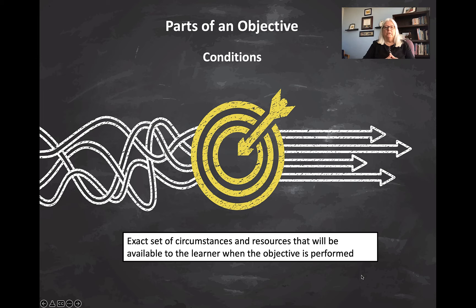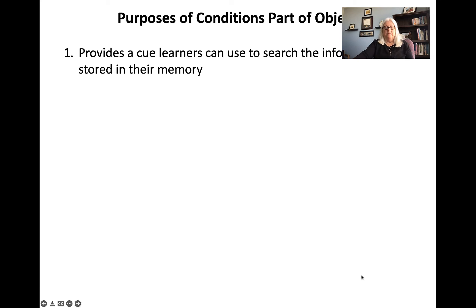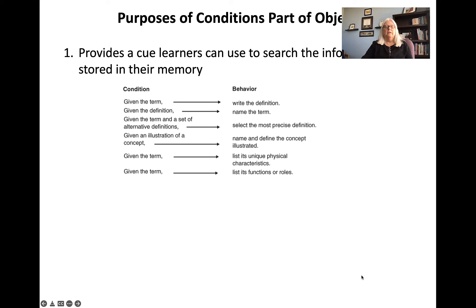The second part is the condition — the set of circumstances and resources available to the learner when the objective is going to be performed. The first purpose is that it provides a cue learners can use to search the information stored in their memory. We do this a lot for verbal information tasks. For example, suppose you want learners to associate a concept with its definition: 'Given the term blank, write the definition,' or 'Given the definition, write the term,' or 'Given the term blank, list its functions and roles.'